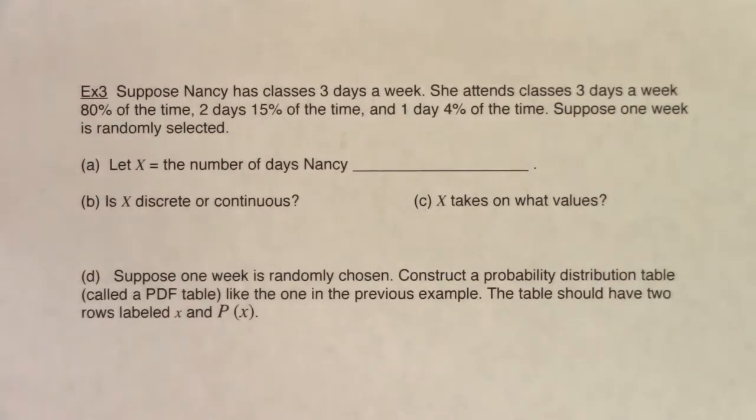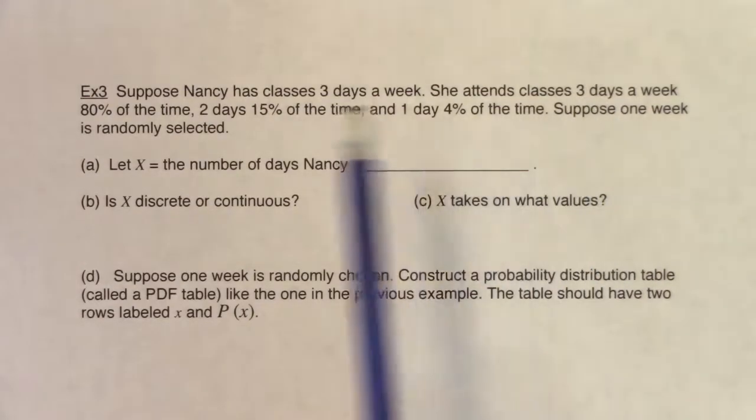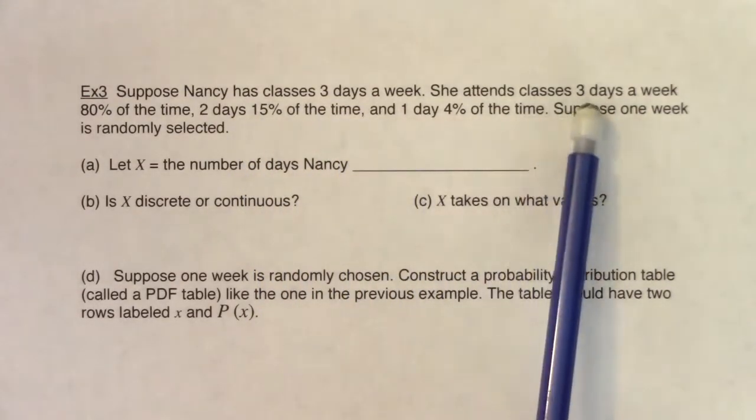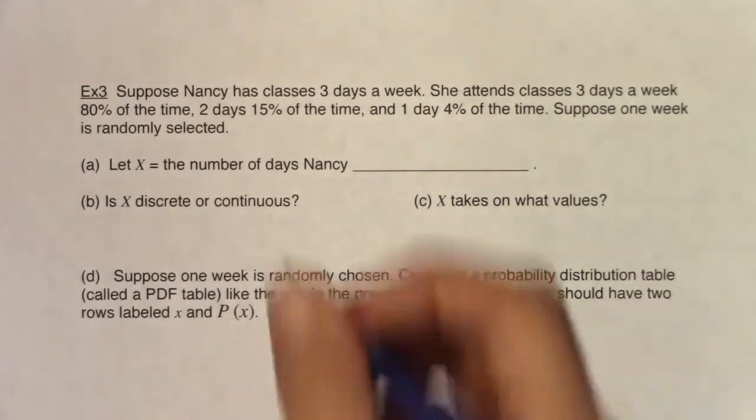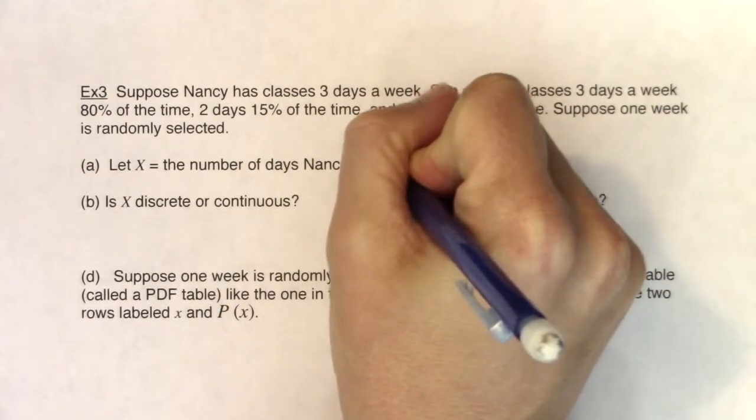So before I even start to read part A, let's think about what on earth is varying here? What are we keeping track of? In part A, I set you up, right? I say X is the number of days Nancy... and what we're thinking about with Nancy is how many days a week she attends class. We've got info on three, two, and one. So this is the number of days Nancy attends class in one week.